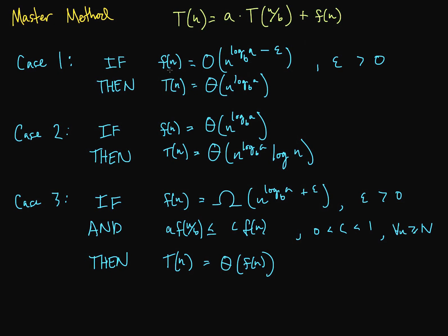We have three cases. Case 1 says that if f(n) is Big-O of n to the log base b of a, minus some positive epsilon, then T(n) is Big-Theta of n to the log base b of a.